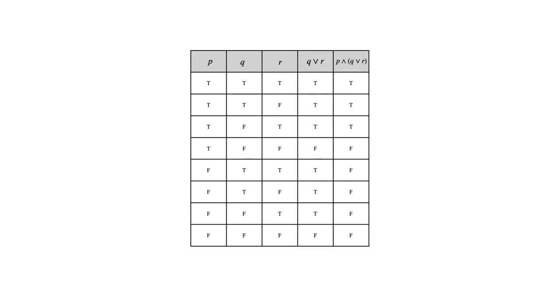We also want to make sure that we have the rows in a consistent order every time we do a truth table. As we're seeing in this example, sometimes we want to compare truth tables, and if we are not consistent about this, it makes the comparison a lot more difficult. So that's something to keep in mind.